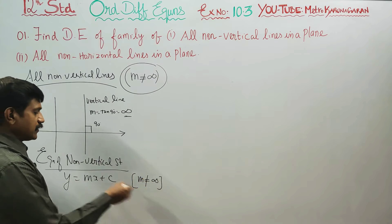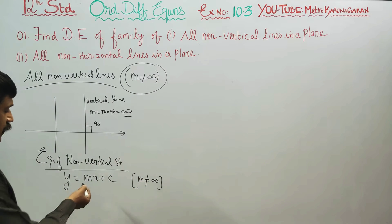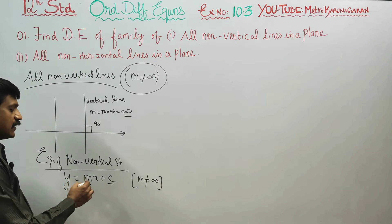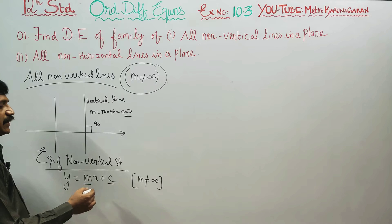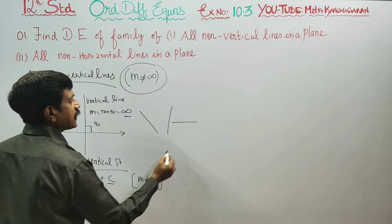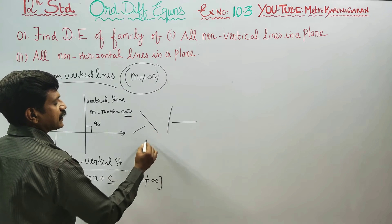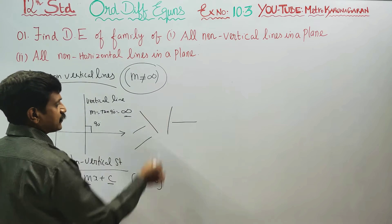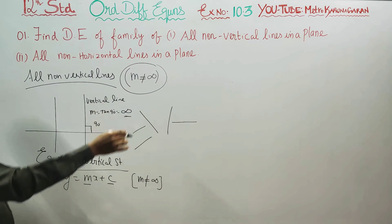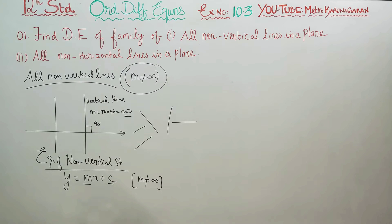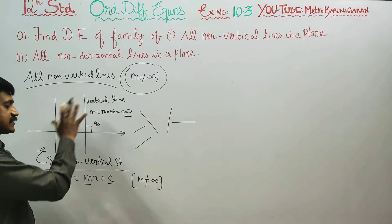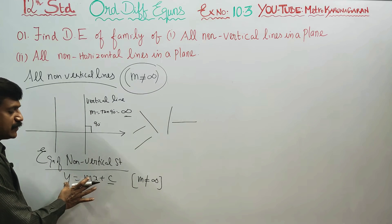Now, regarding the arbitrary constants: in the equation of straight lines y equals mx plus c, both m and c are arbitrary constants. M represents the slope — parallel lines, slanting lines — all kinds of lines are covered. M and c are the two arbitrary constants in the equation.